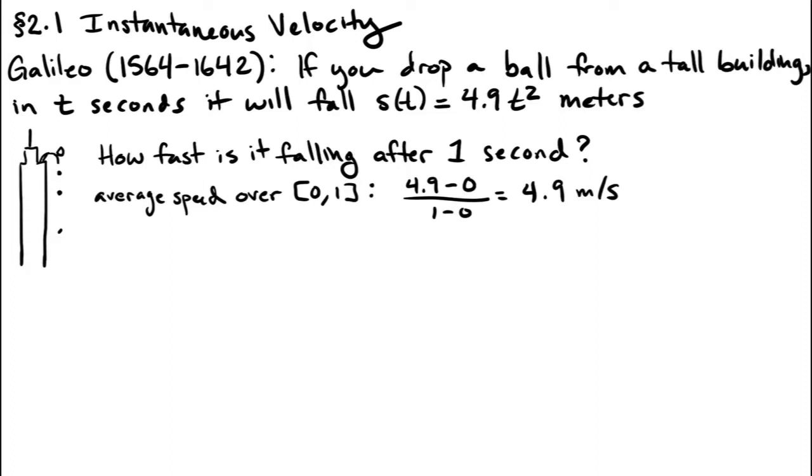Now we want a smaller interval that's closer to the target time of one second, so we look at say 0.5 to 1. We calculate the distance at one second, which is 4.9 meters, the distance at 0.5 seconds—so that would be 4.9 times 0.5 squared—then we take their difference and divide by the change in time, and it works out to be 7.35 meters per second.